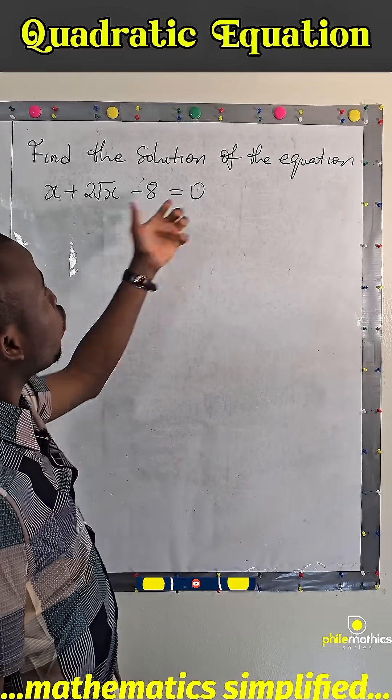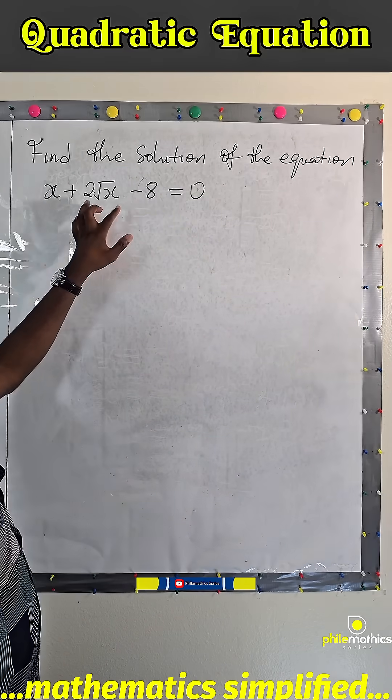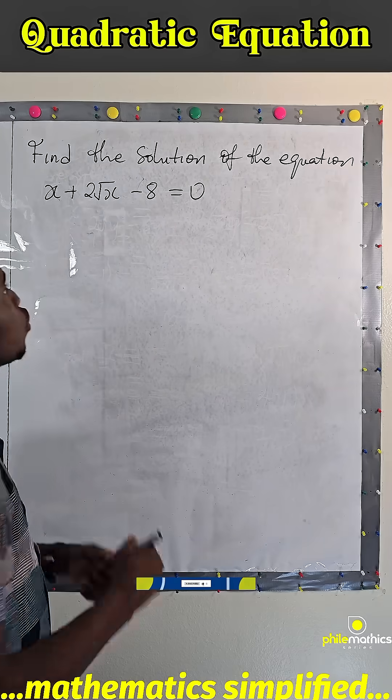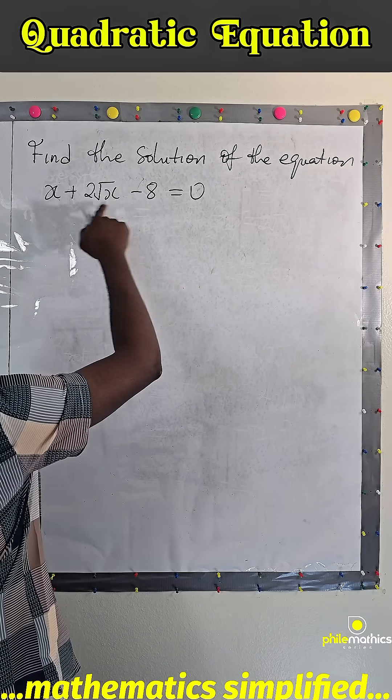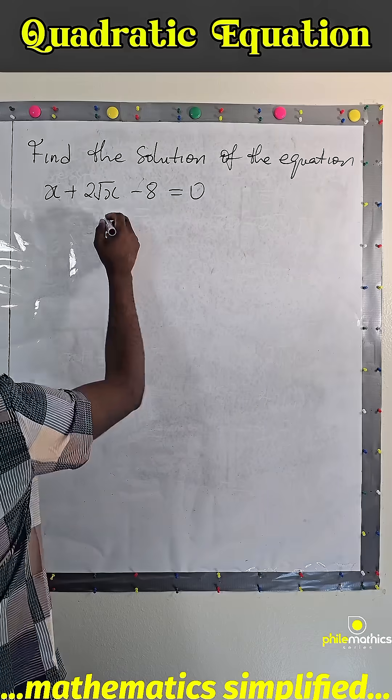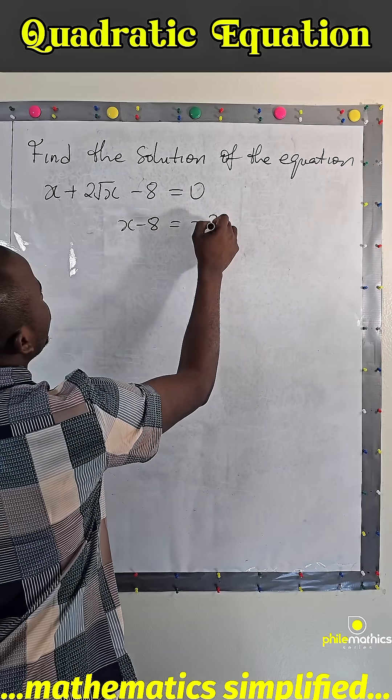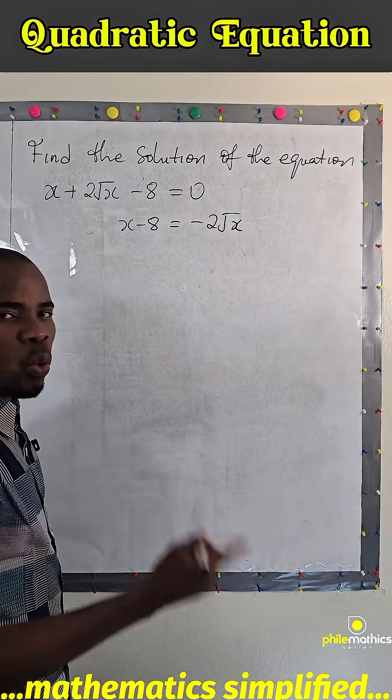We are asked to find the solution of this equation here. So what you want to do is to separate this 2 root x from this and then square. So if I take this to the right hand side, I have x minus 8 equals minus 2 root x.